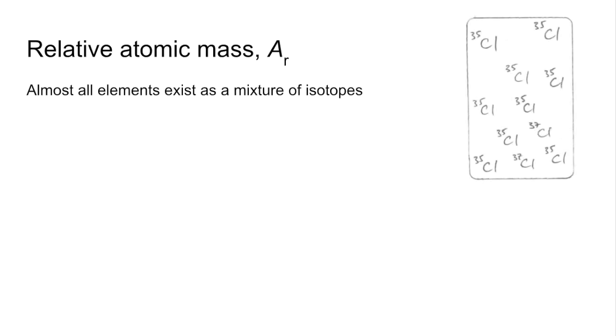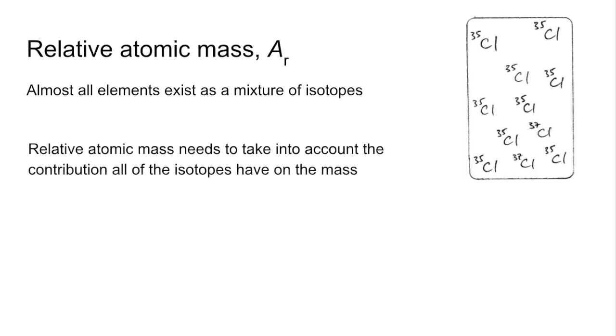So moving on to relative atomic mass now: almost all elements exist as a mixture of isotopes. So in the case of chlorine, we've got chlorine-35 and chlorine-37 isotopes and you can see there are far more 35s than 37s. So the relative atomic mass needs to take into account the contribution all of the isotopes are having on the overall mass, the average mass.